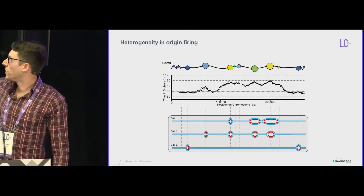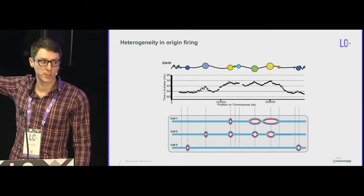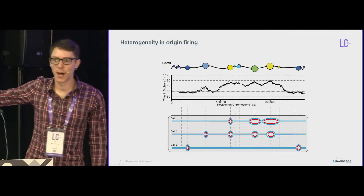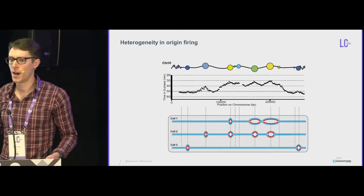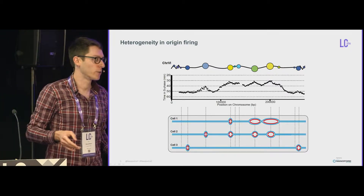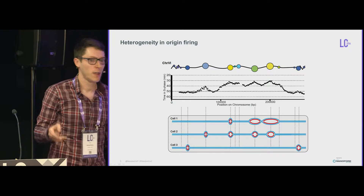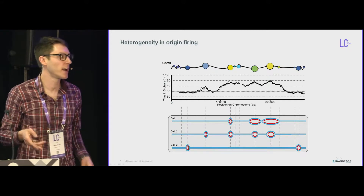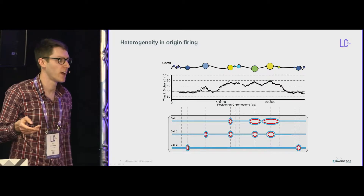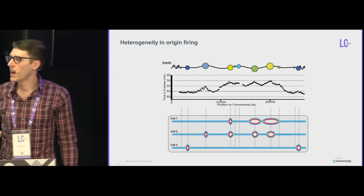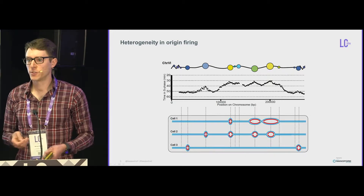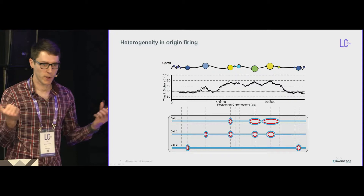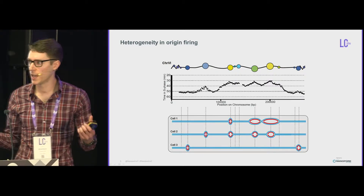I'm showing you a diagram here of S. cerevisiae chromosome 6, where all the origins of replication are marked with a dot. The bigger the dot, the earlier in S phase that origin will tend to fire. And the more yellow the dot, the more efficient the origin — so the higher the probability it has of firing in a given cell cycle. When an origin fires, it starts a bidirectional replication fork that moves in either direction down the chromosome to replicate the nascent strand.